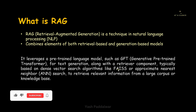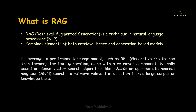FAISS allows developers to quickly search for embeddings of multimedia documents that are similar to each other. Don't worry about these terms — we'll be looking into this in the upcoming videos. For now, just remember that FAISS is based on a dense vector search algorithm used for retrieving documents or information. There can also be another vector search algorithm-based technique, for example approximate nearest neighbor, or ANN search, to retrieve relevant information from a large corpus or knowledge base.